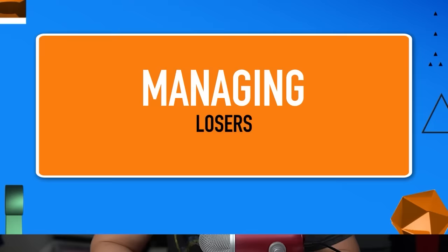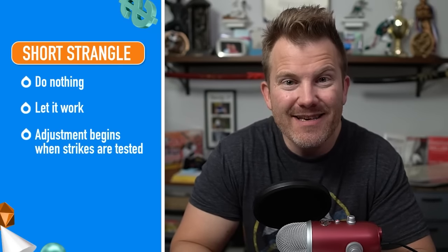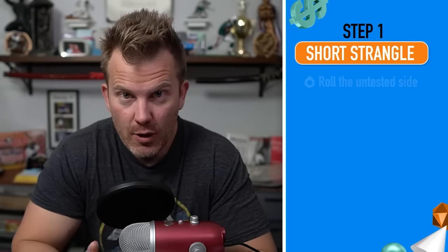Managing strangle losers: if the stock is between your short strikes, don't do anything — the strategy is working, let it work. It isn't until one of the short strikes gets hit that the adjustment protocol is triggered. When the stock rallies and your short call gets hit, or falls and your short put gets hit, it's basically a three-step process with a fourth bonus step at your discretion.